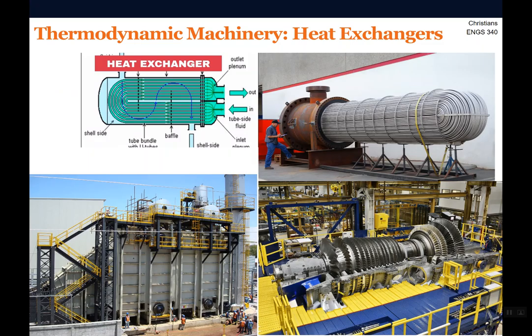The last thing we'll talk about is a heat exchanger — there are all different kinds. This one up here in the upper right has all those little tiny tubes; it's called a shell and tube heat exchanger. It's one type that's commonly used. You would have one fluid going through all of those tiny tubes, as shown in this sketch, and then there's another fluid going through the outside that works its way over all of those tubes.